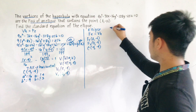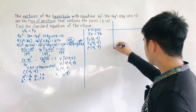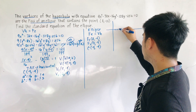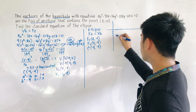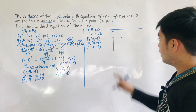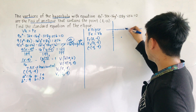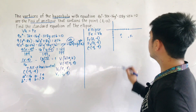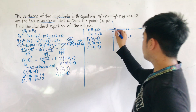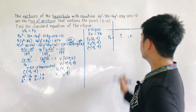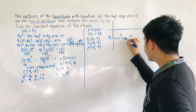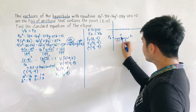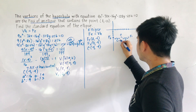Let us try to graph this. The center is located at (4, negative 4). F1 is at (8, negative 4), and F2 is at (0, negative 4). From the center going to each focus, that distance is c. From the center to F2 is 4 units, and from the center to F1 is also 4 units. Therefore, c equals 4.